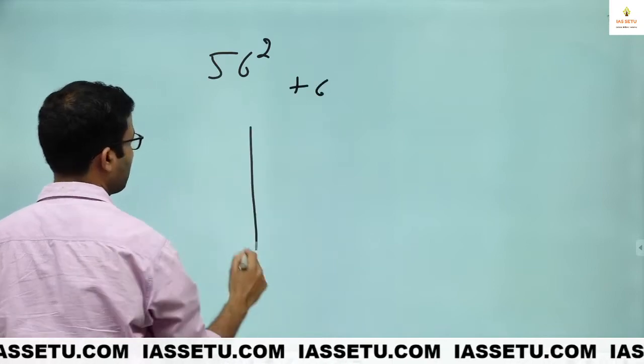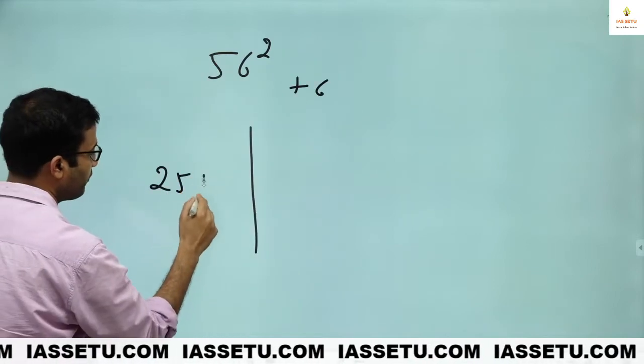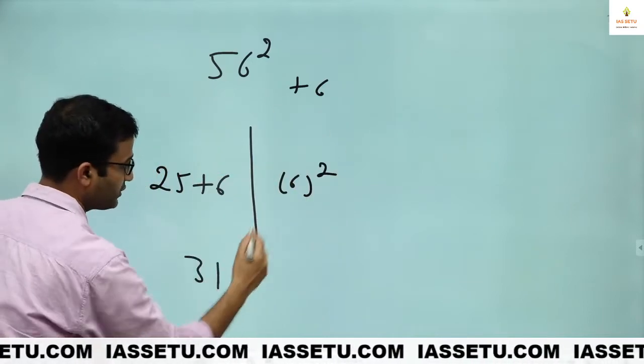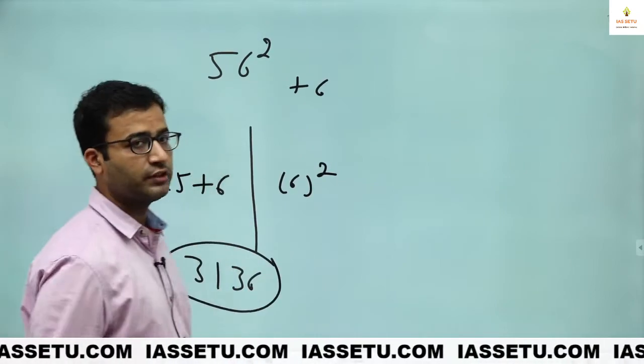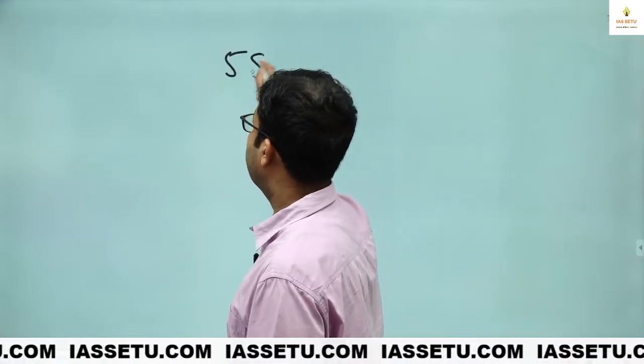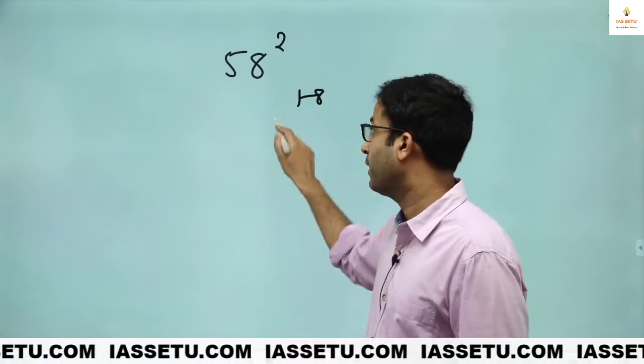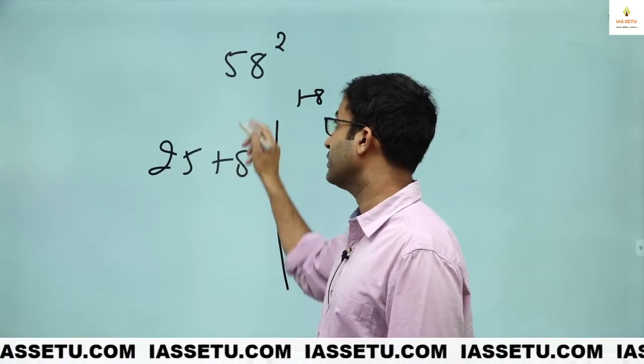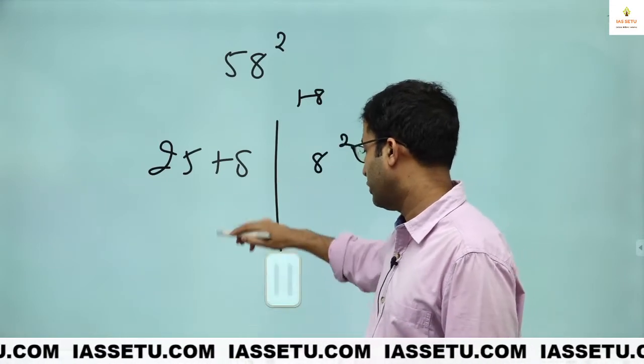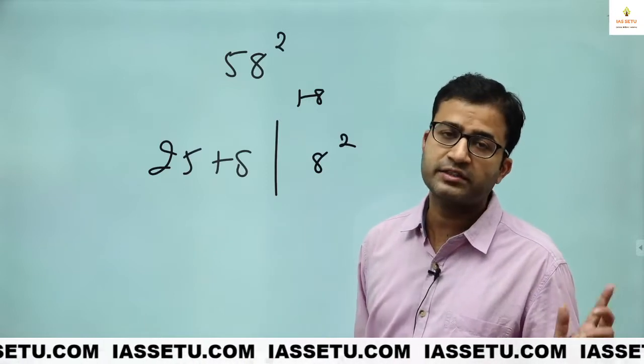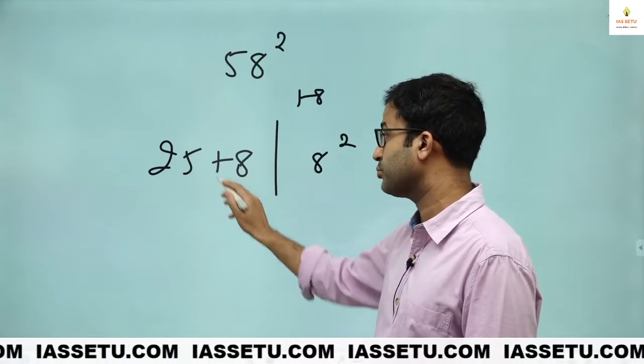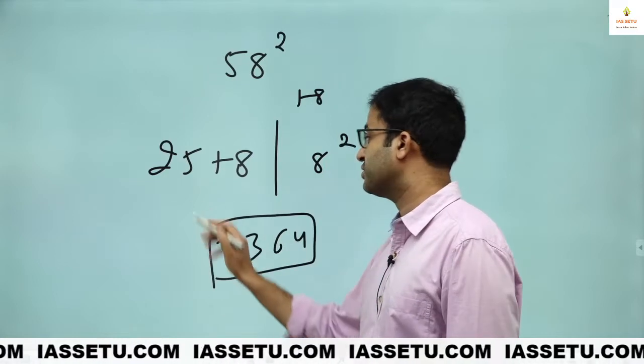56 square plus 6. Left hand side, you write 25 plus 6. Right hand side, 6 square in your mind. So this is 31, 6 square is 36. So this is 3136. 58 square. This is 8 extra. Left hand side is 25 plus 8. Because 50 base become 2500. So 25. This is 8 square. 33. This is 64. 3364.